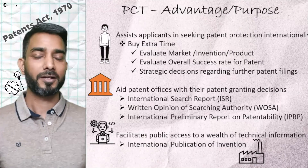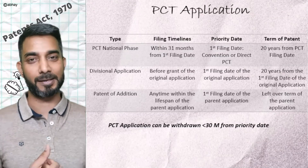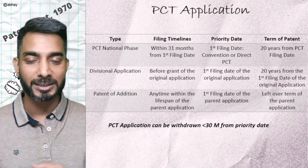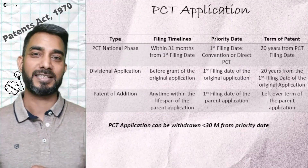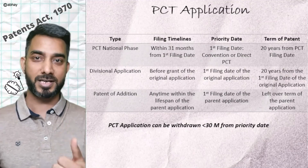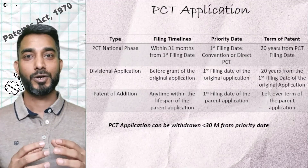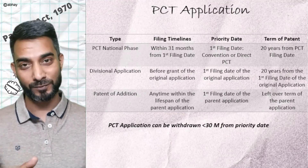Finally, here is a snapshot of the timelines for a PCT application. Another interesting aspect is that a PCT application can be withdrawn within 30 months from the priority date. This brings us to the end of this episode. I hope you found it useful. We will meet again as we discuss yet another topic — till then, be good and take care.